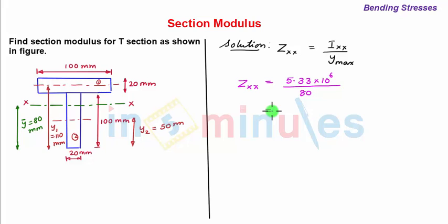So zxx comes out to be 66.66 into 10 to the power 3 mm cube. With this our problem solved. Thanks for watching in 5 minutes.